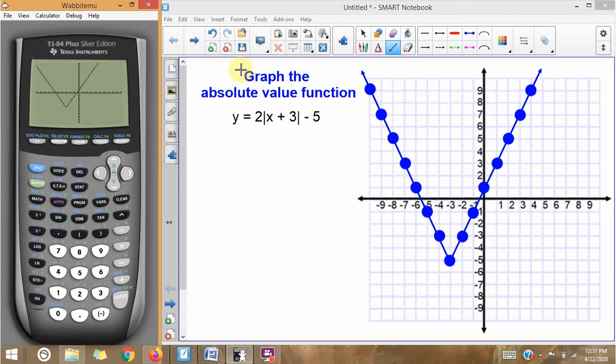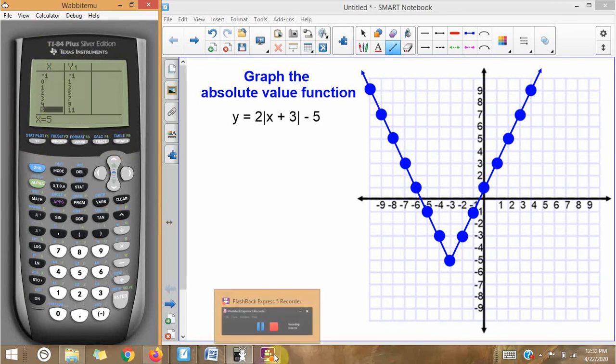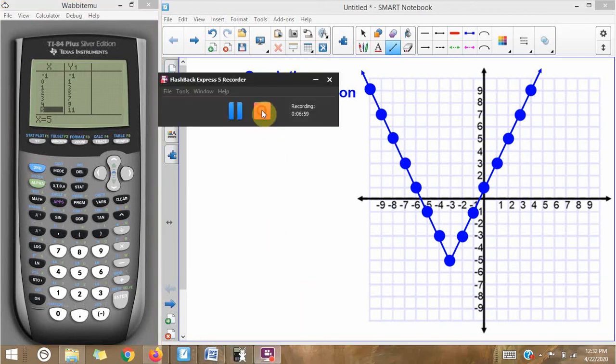And that's everything. That is how you graph an absolute value function using your TI-84 or whatever graphing calculator you may have. Make sure that you are well-versed in your Y equals menu, where to find the absolute value button, and make sure that you type in that equation correctly. Remember to apply your graph to compare. And second graph brings you to your table of point values. I hope you enjoyed this video. If you did, please let me know down in the comments below. And thank you for watching.